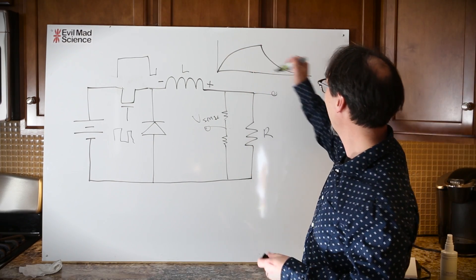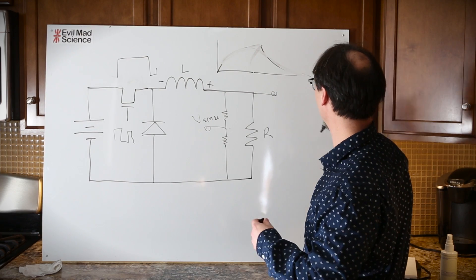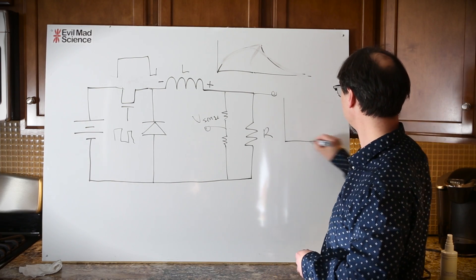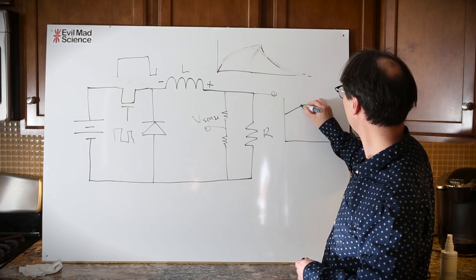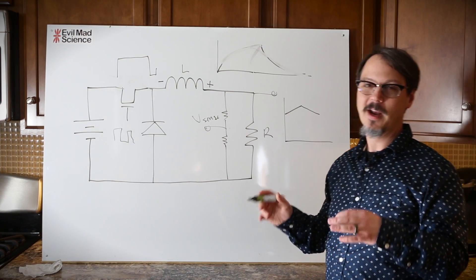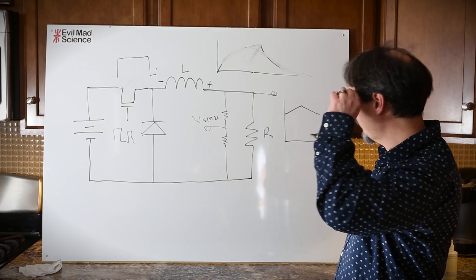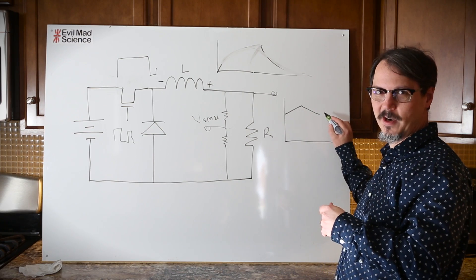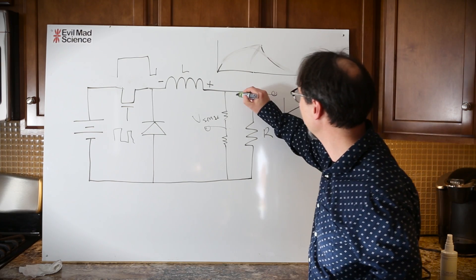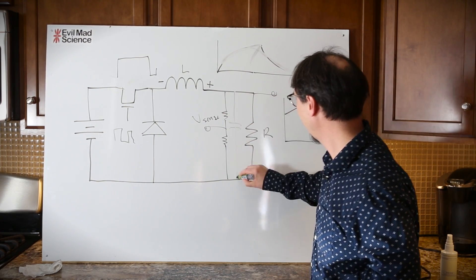Except, of course, now what you're going to have at the output, you're not going to have this. Ultimately, what you're going to have is there's going to be a time where it's charging and a time that it's discharging. This is noise. This is noise on your output voltage. So one thing they'll do, of course, is throw a big old cap in there and filter it.